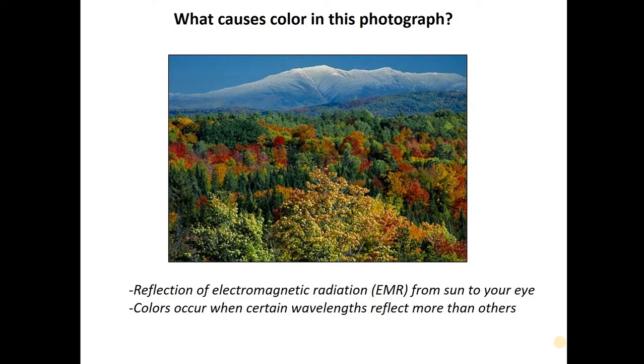And I want to start out then by asking a question. What causes color in this remotely sensed photograph? The reason you're seeing different colors in this photograph is that electromagnetic radiation, or light, that starts at the sun bounces off various landscape elements and comes back to your eye.